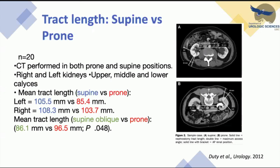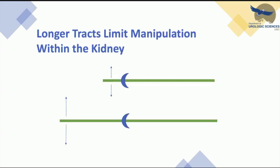Regarding tract length: a study prospectively included 20 patients with CT in supine and prone, and 20 patients with supine oblique versus prone scans. They found that the prone position is associated with significantly shorter nephrostomy tract length and more potential access sites, which may improve ease and safety of percutaneous renal access. Longer tracts can limit manipulation within the kidney.